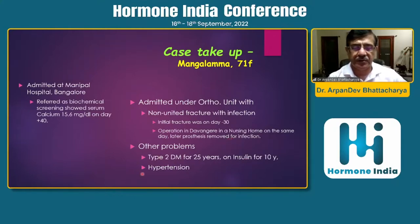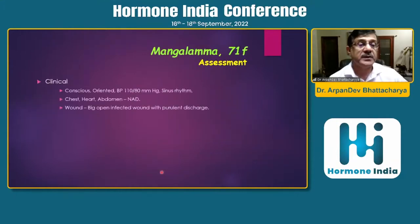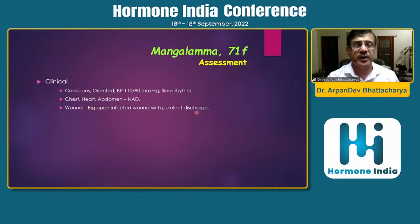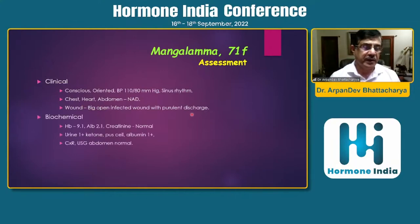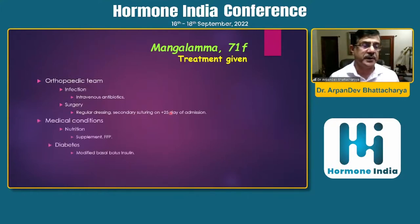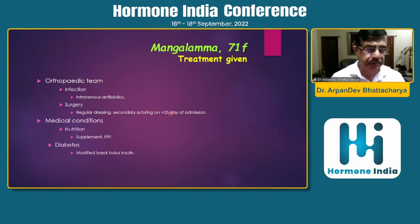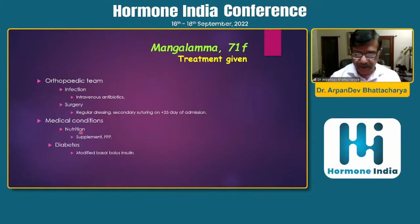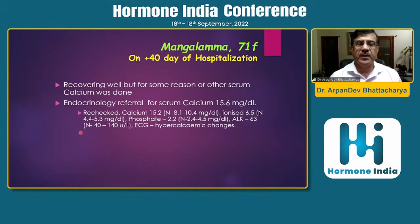Background: type 2 diabetes on insulin with fair control, and hypertension. She was operated in a different city. Because she was not improving due to non-union, she was referred back. Clinically: conscious and oriented, BP normal, sinus rhythm, normal heart rate, normal systemic examination. There was a large open infected wound being drained and dressed. Biochemically: albumin 2.1, normal renal function, low hemoglobin, urine 1+ ketone, chest X-ray and ultrasound abdomen normal. She was recovering well on IV antibiotics, regular dressings, protein infusion, and modified basal-bolus insulin — when blood calcium was done and she was referred to us.